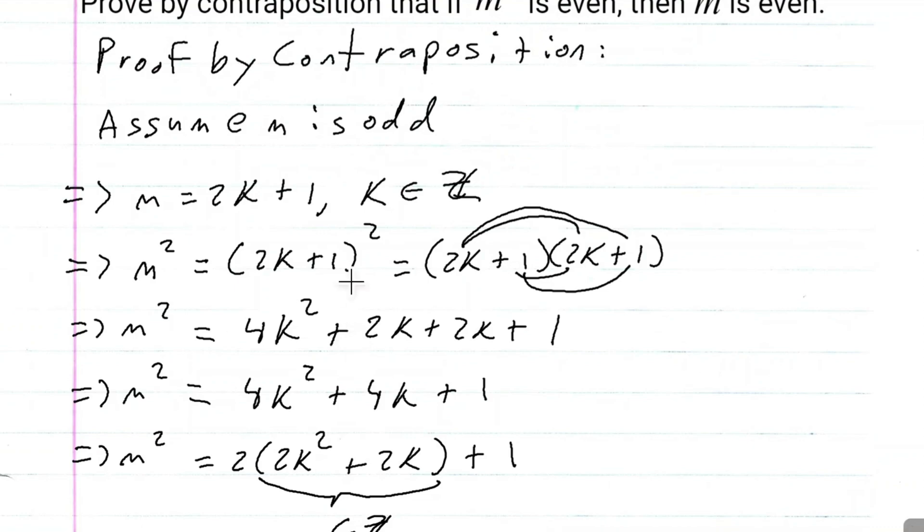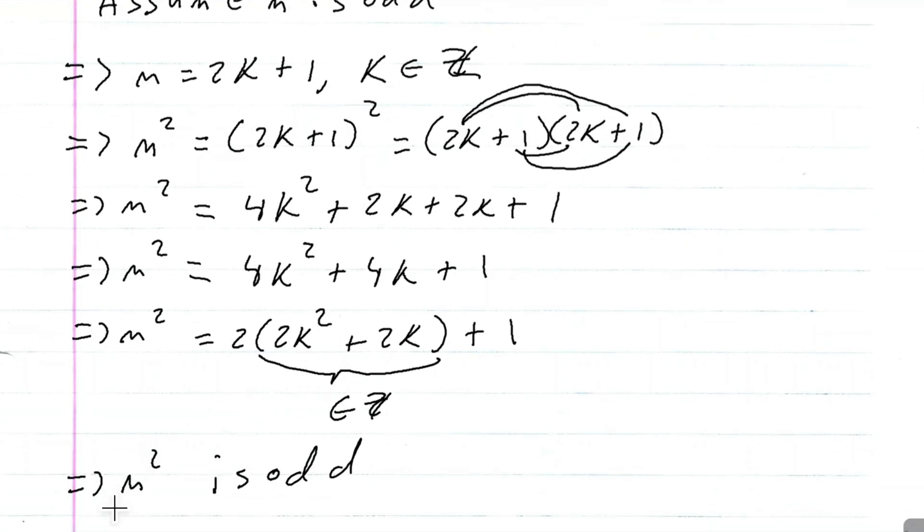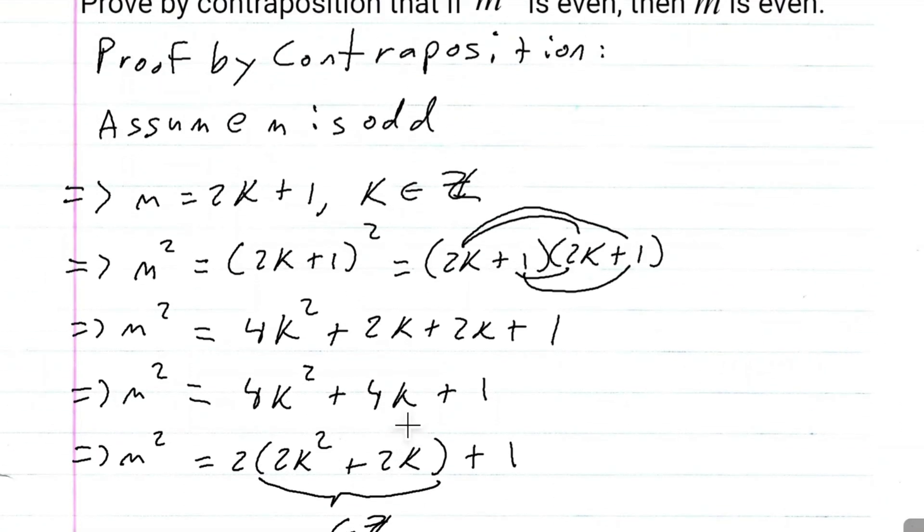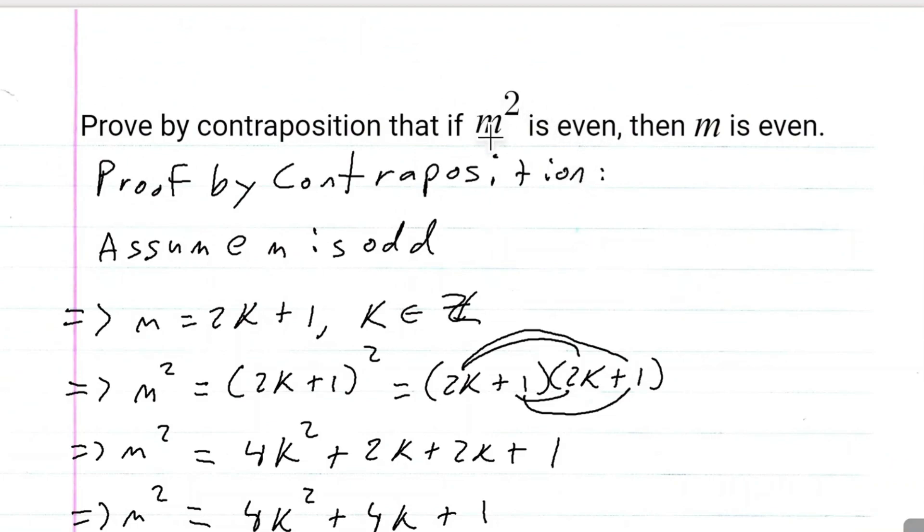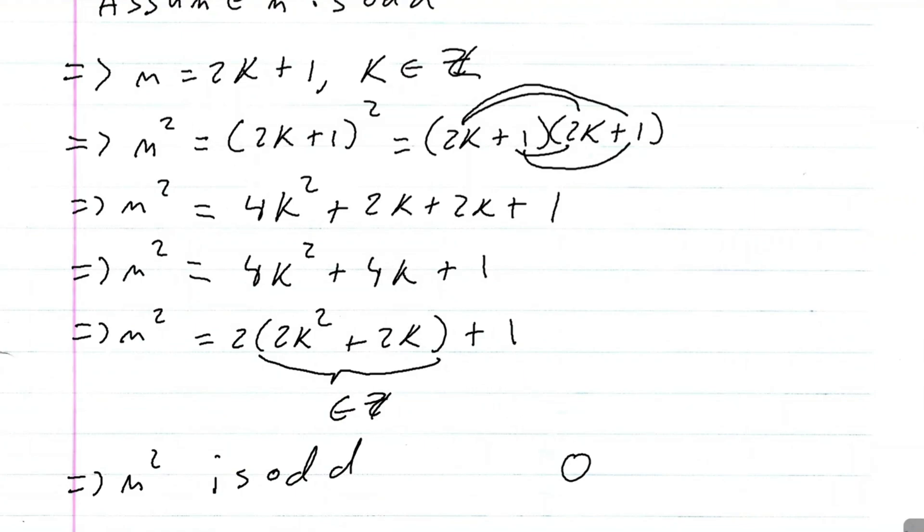We assumed that m was odd and we got m squared is odd. That means we've proven this statement by contraposition. So we know that if m squared is even, then m is even. We've proven what we set out to do by contraposition.